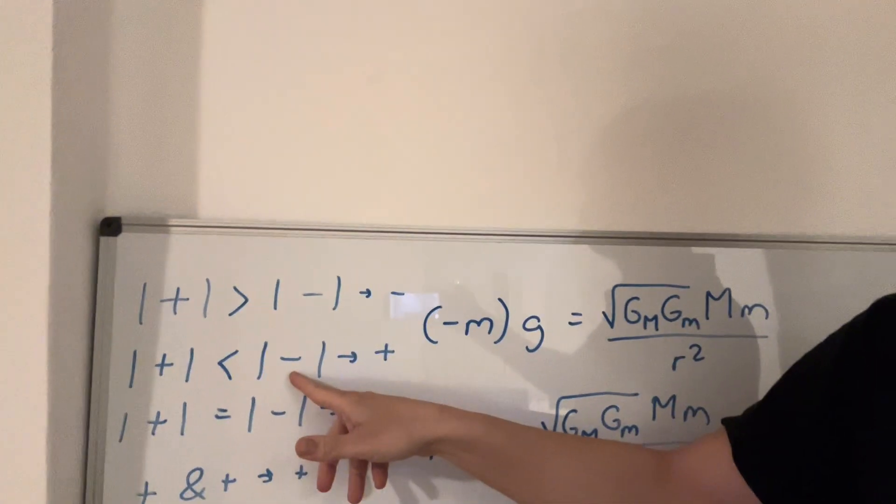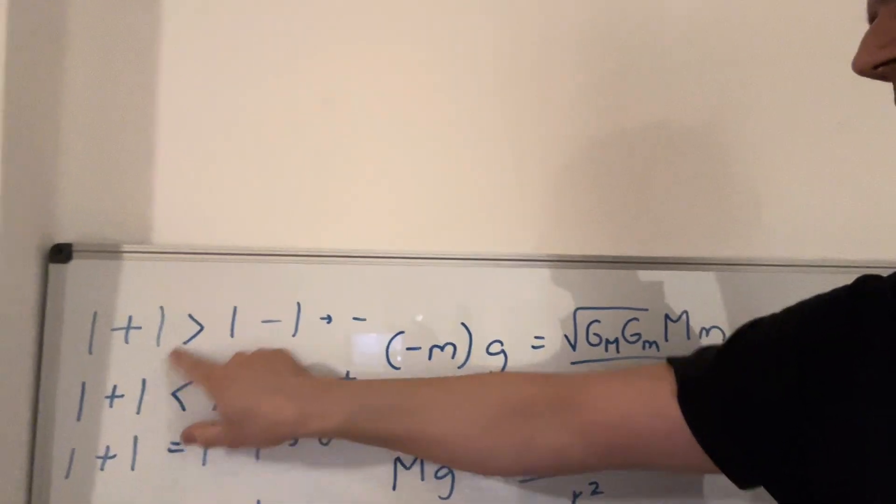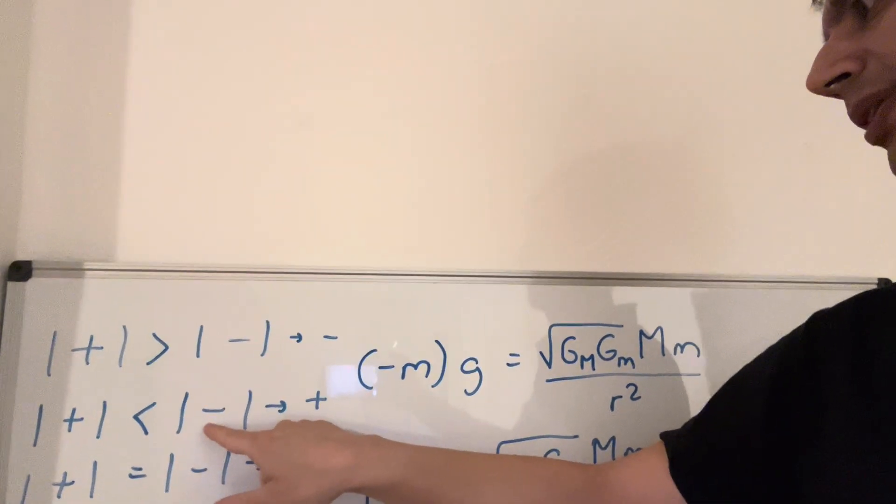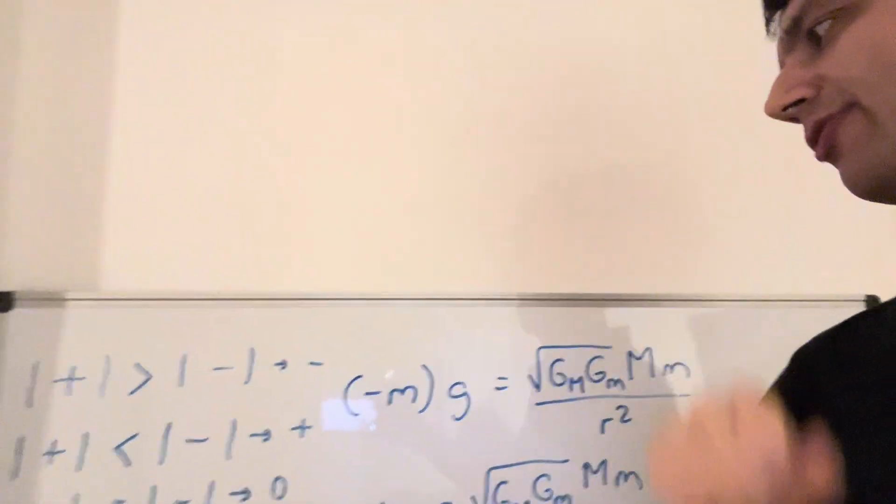You have a very big negative mass here. The exotic matter is the bigger one. And so the attraction is always positive here.